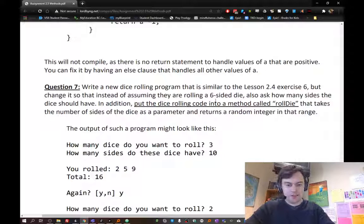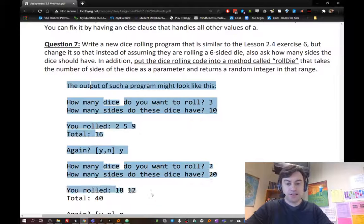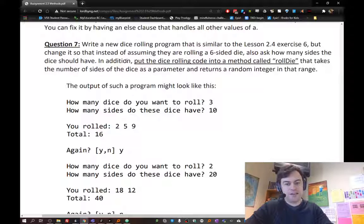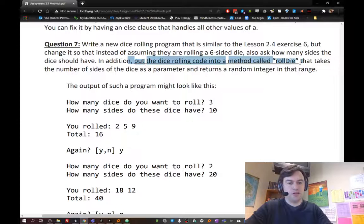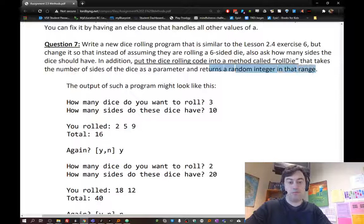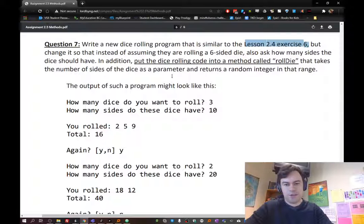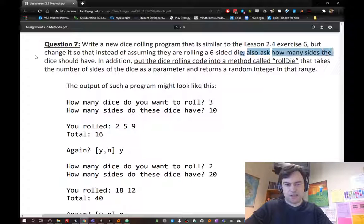In this question, we are going to be looking at the dice rolling program from the repetition assignment, and we're going to be taking that code and modifying it so that the dice rolling code is in a method called rollDie. It takes the number of sides of that die as a parameter and returns a random integer in that range. So basically we're going to have the code from exercise 6 from 2-4, and then modify it to take in the number of sides and make that a method instead of having it hard coded.